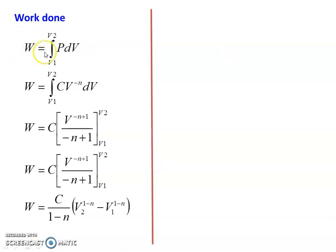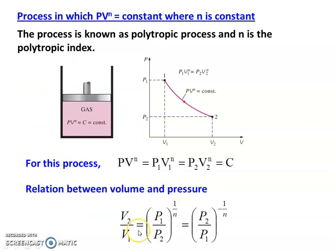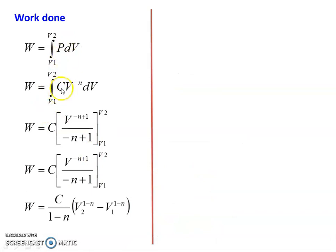Next we derive the work done: W = integral from V1 to V2 of P dV. We substitute P in terms of volume. Since PV^n = constant, we get P = C·V^(−n). So W = integral from V1 to V2 of C·V^(−n) dV. Integrating, with C as a constant: V^(−n+1) divided by (−n+1), evaluated from V1 to V2.